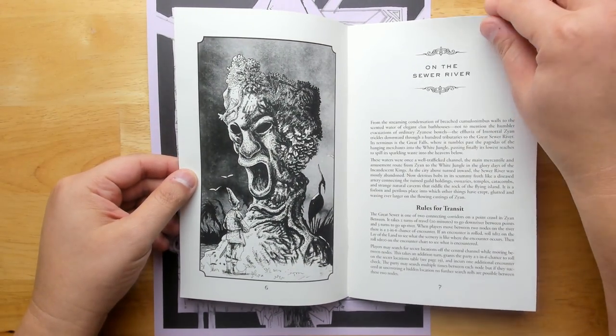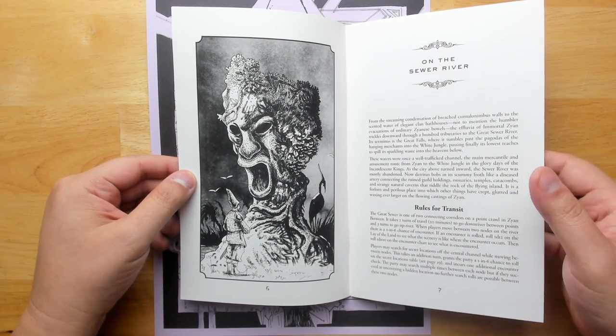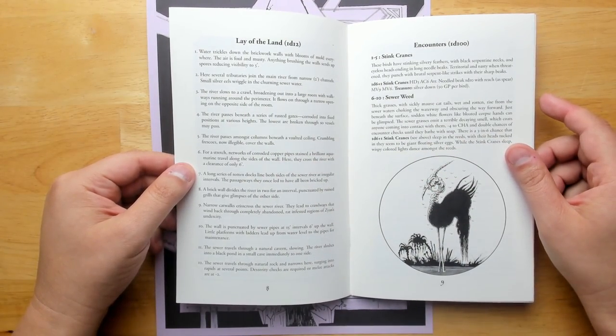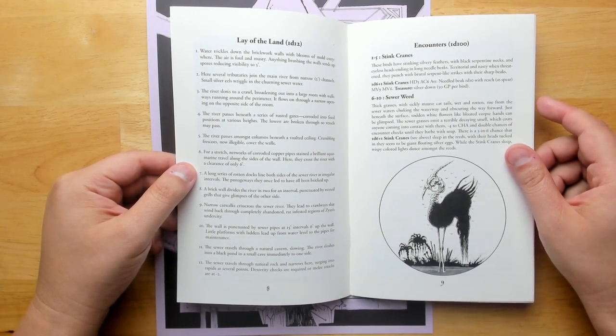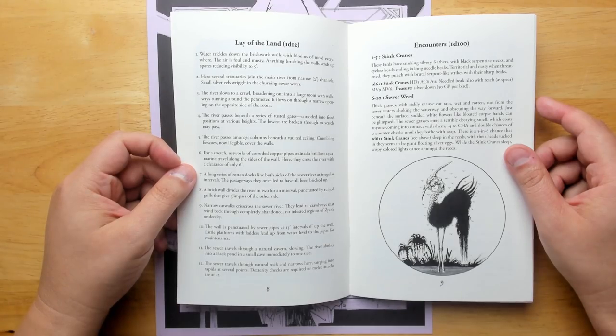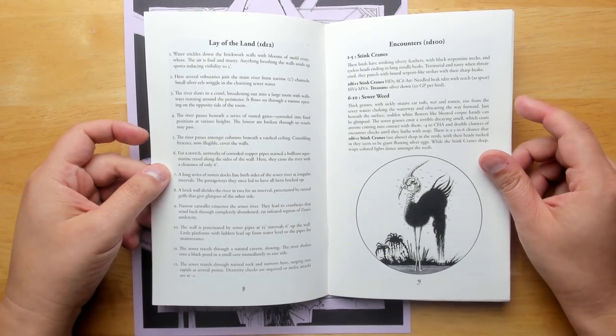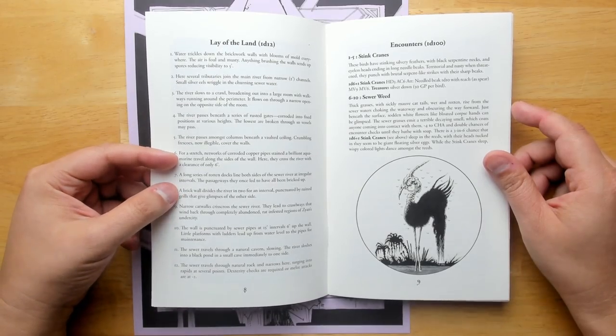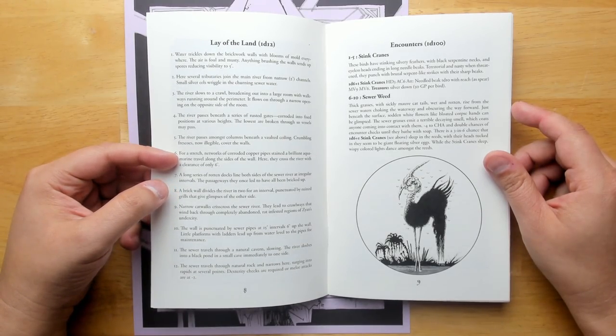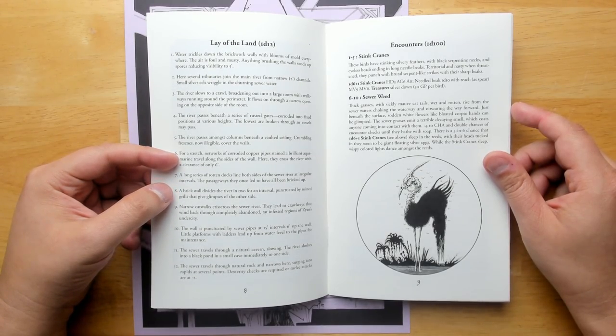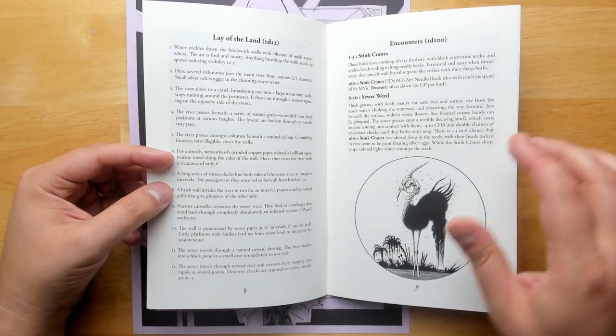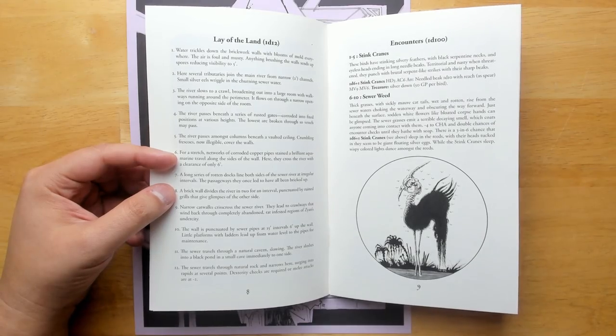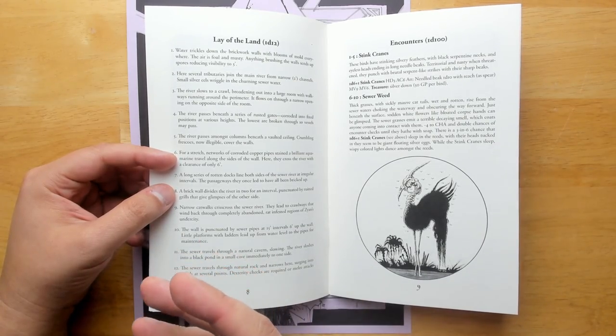So as we continue down the sewer river, we have rules for transit because it is a bit of a point crawl. We're going up and down, going from one interesting location to another. You can always roll on the lay of the land to get information about what this part of the sewer happens to look like. For example, you could have a brick wall divides the river in two for an interval, punctuated by ruined grills that give glimpses of the other side. So these are like little tactical or structural changes.